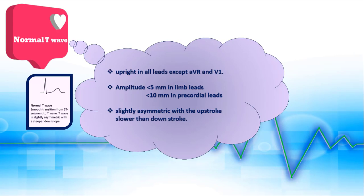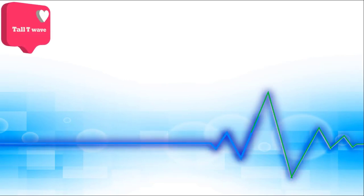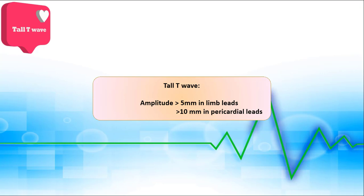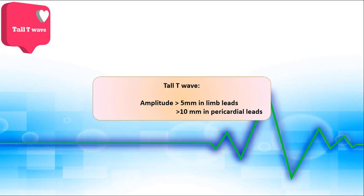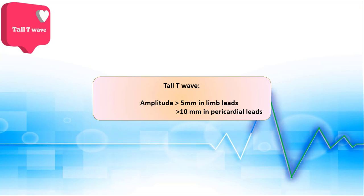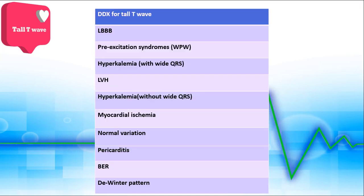There are several well-known normal variations that may be mistaken for life-threatening situations like acute ischemia. Let's go through the first important normal variation: tall T waves. Remember that there is no universal definition for tall T. In general, if T wave amplitude is more than 10 millimeters in precordial leads or more than 5 millimeters in limb leads, we consider it tall. Tall T is seen in many different situations and has many differential diagnoses.